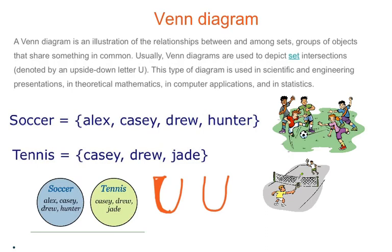Now, soccer — these are persons who love soccer: Alex, Casey, Drew, and Hunter. Tennis: Casey, Drew, and Jade. So these are two sets — set S for soccer, set T for tennis — and we can draw a Venn diagram to represent this information.